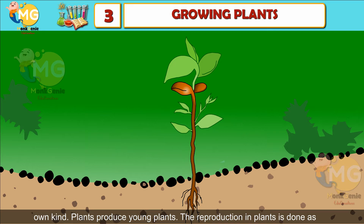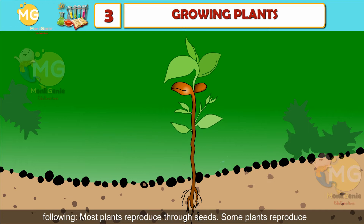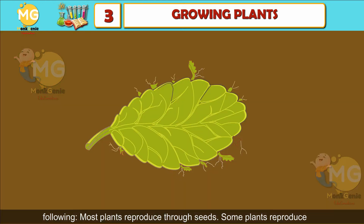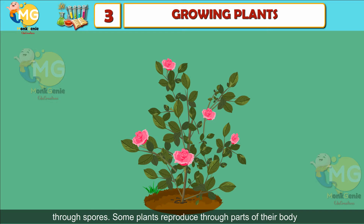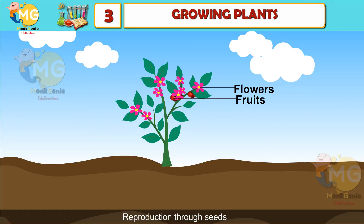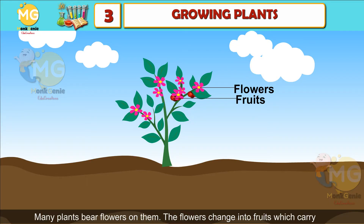Plants produce young plants. The reproduction in plants is done as following: most plants reproduce through seeds, some plants reproduce through spores, and some plants reproduce through parts of their body.